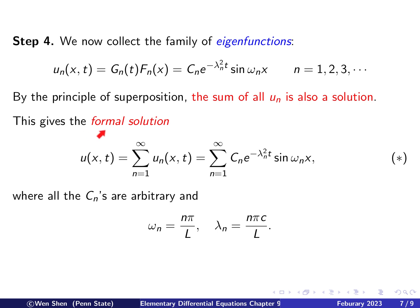We call this a formal solution, because there are issues related to convergence. The formal solution u is the sum of u_n over all n, which gives a Fourier-type series. In this sum, the constants c_n are still arbitrary — we have used the equation and the two boundary conditions, but we have not yet used the initial condition. The initial condition is what we will use to find the c_n's.